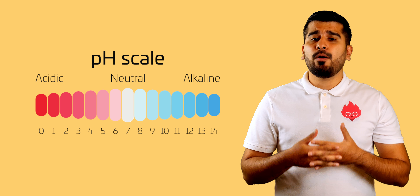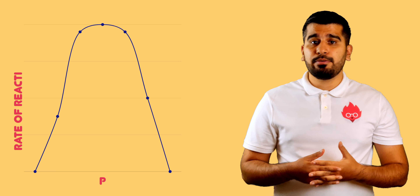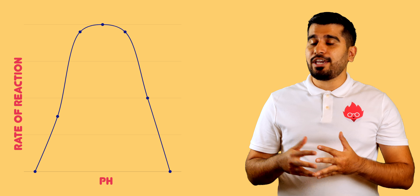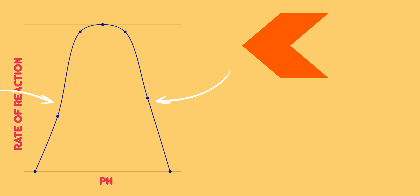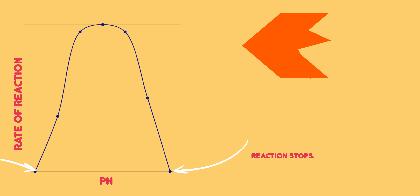Looking now at how pH affects enzyme action. Just like before, we can see a bell-shaped graph. The shape of the enzyme is unchanged at the optimum pH. If the pH is higher or lower than the optimum pH, the enzyme's active sites begin to change, preventing the substrate from binding, and so the reaction eventually stops.